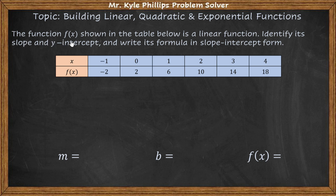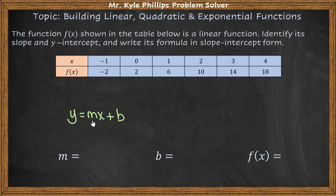Here they say the function f of x shown in the table below is a linear function. Identify its slope and y-intercept and write its formula in slope-intercept form. The first thing we have to know about slope-intercept form is that it is y equals mx plus b. The reason this is called the slope-intercept form is because you have your slope and your y-intercept. Mathematicians — we're not very creative with names.